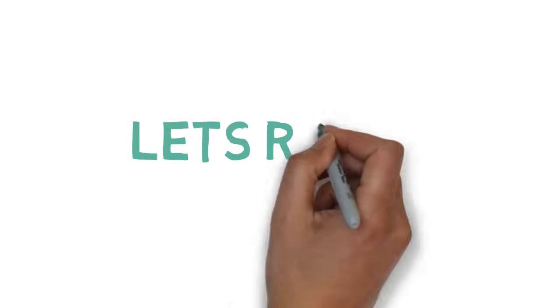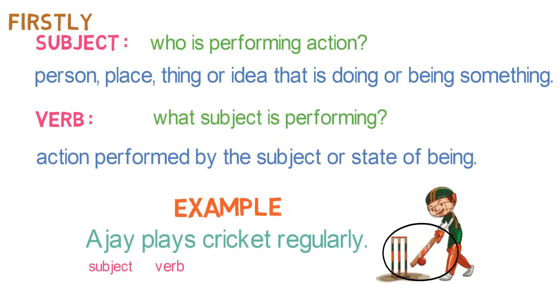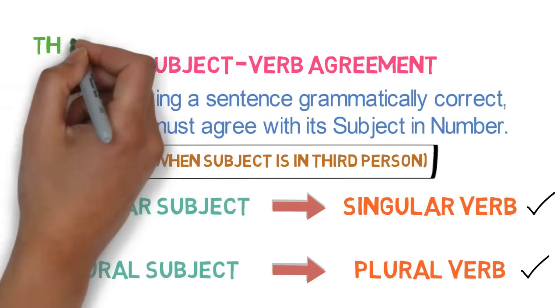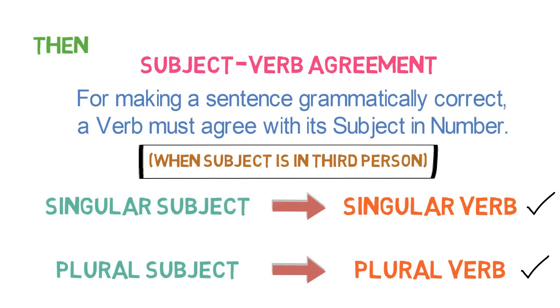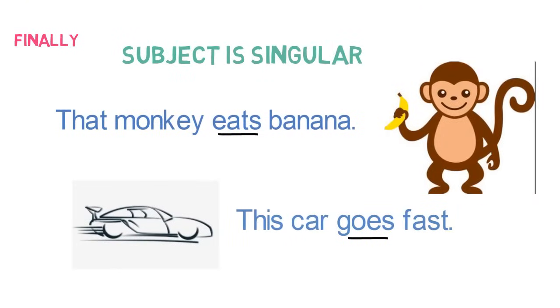Let's quickly revise what we learnt in this lesson. Firstly, we understood what is subject and verb in a sentence. Then, we understood how to identify subject and verb in any sentence. Then, we understood what is subject-verb agreement. Finally, we went through some of the examples of subject-verb agreements general rule.